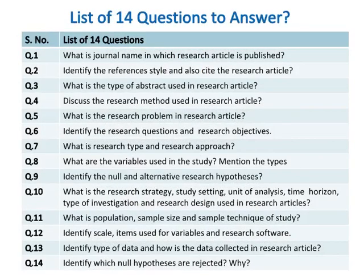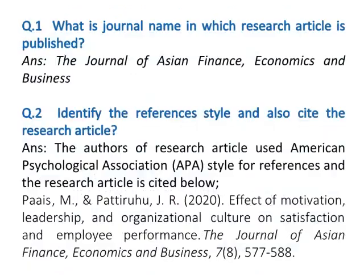Here is a list of 14 questions to answer. You can search in the research article PDF file, starting from the journal name to identifying which null hypotheses are rejected and why. Question one: What is the journal name in which the research article is published? The answer is The Journal of Asian Finance, Economics and Business. Question two: Identify the reference style and also cite the research article. The answer is the authors used American Psychological Association (APA) style for references, and the research article is cited below.